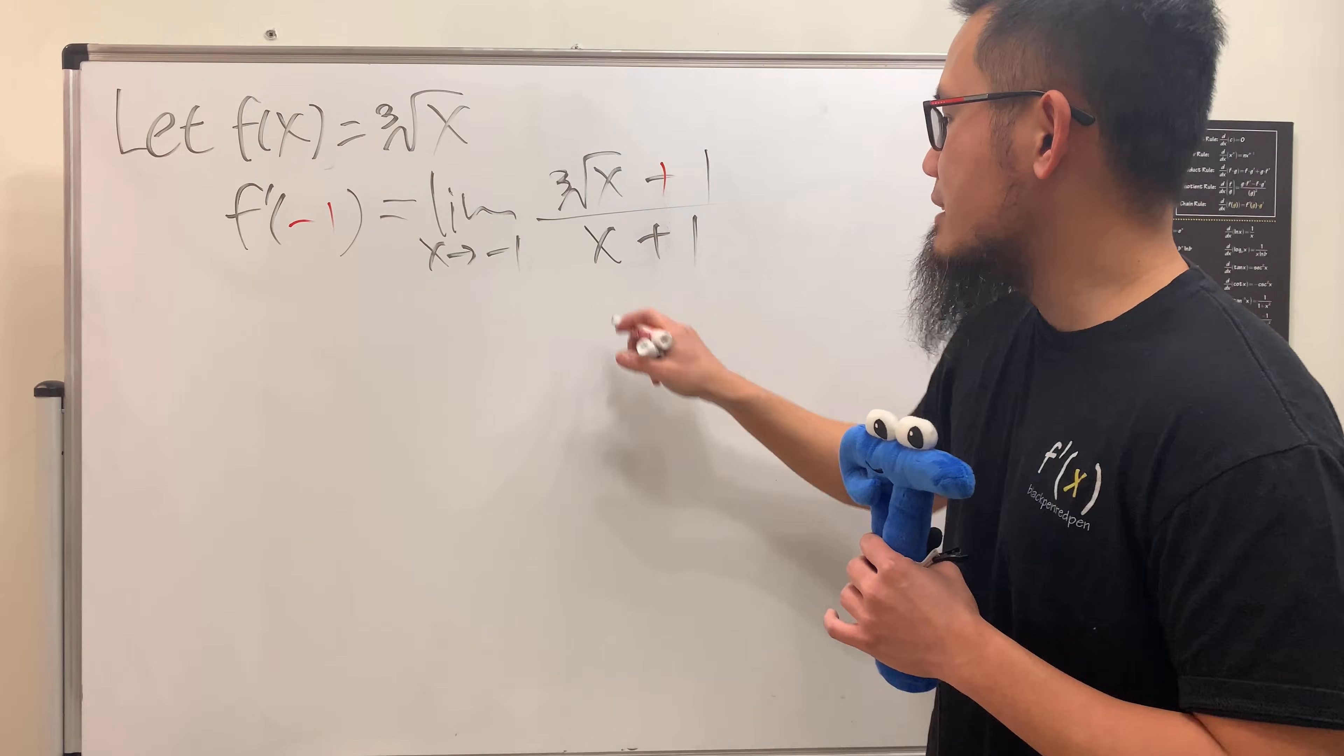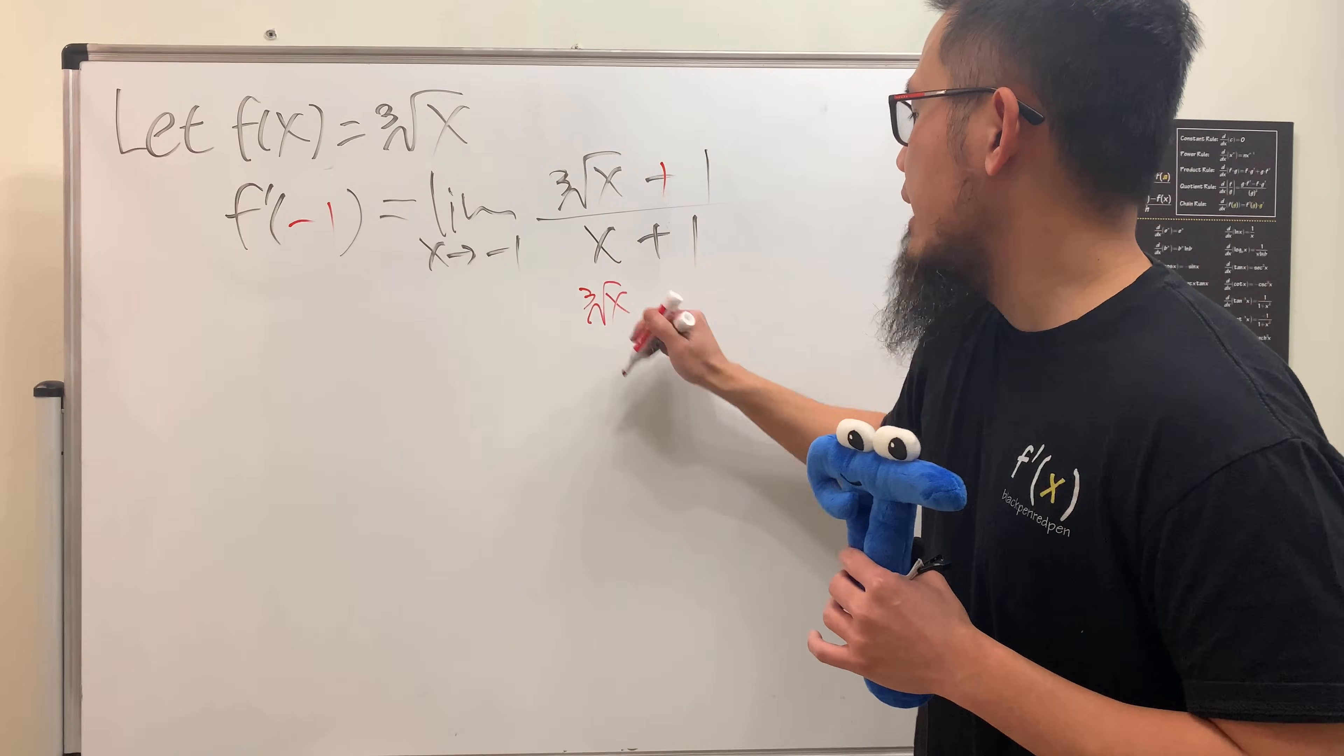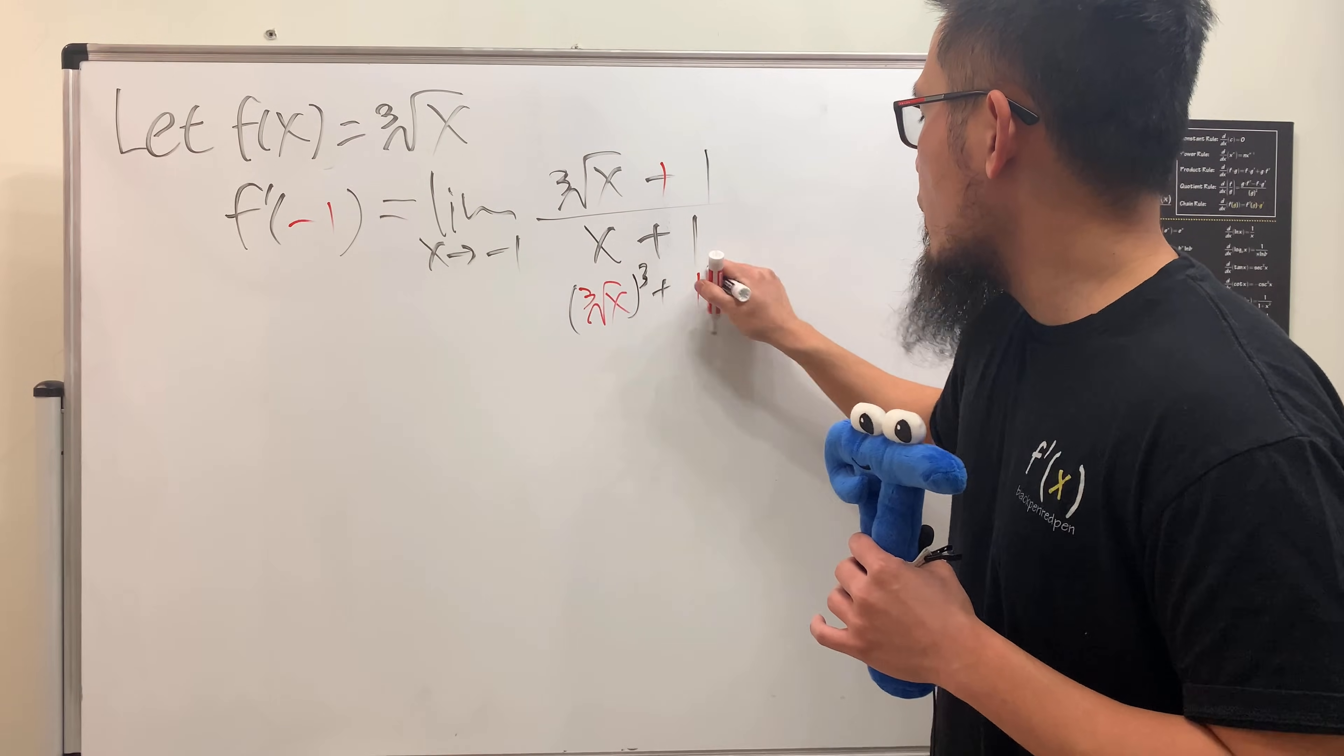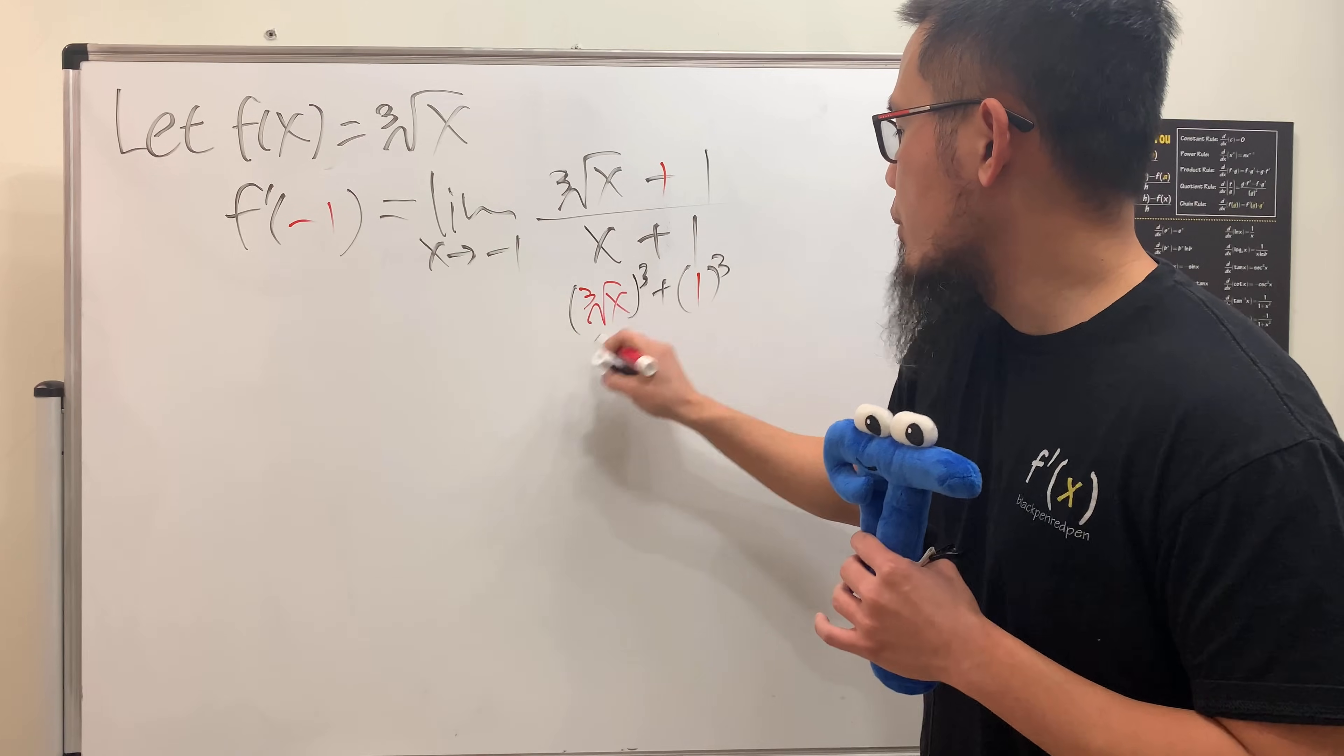And now, yes, we can just factor this guy, which is going to be what? Cube root of x, and then look at this as the third power, and plus 1 to the third power right here. This right here is actually just equal to this guy,